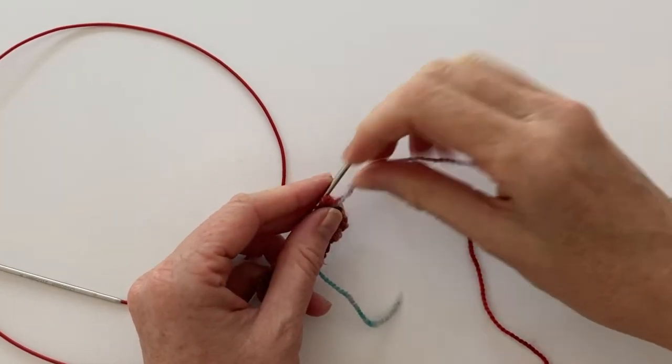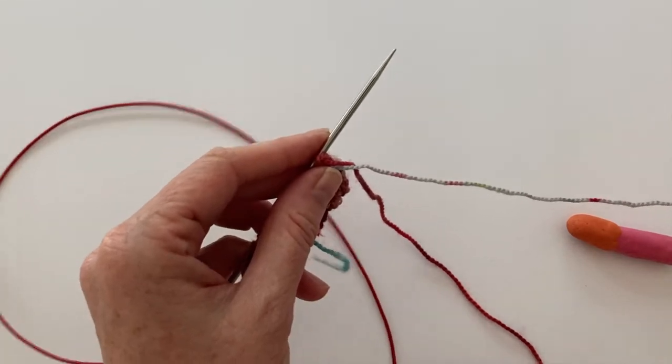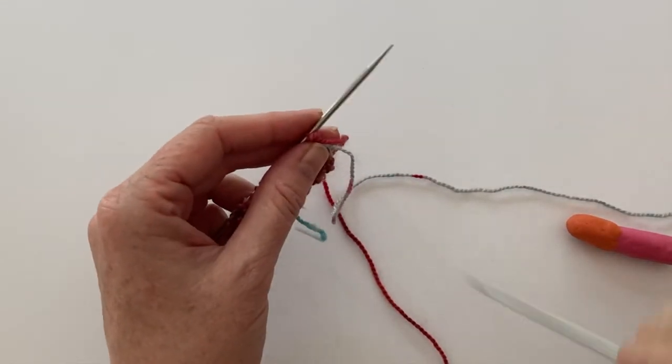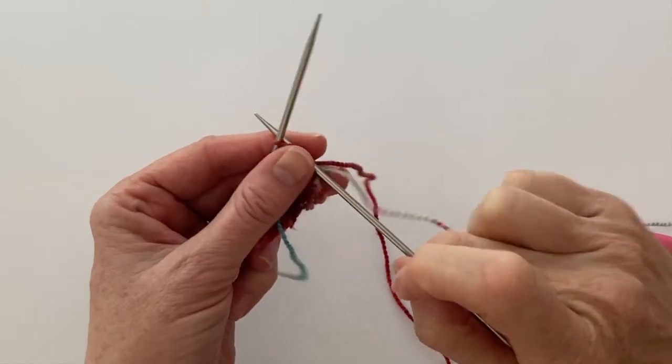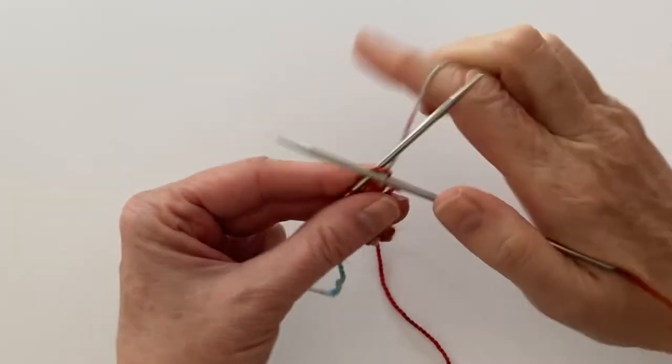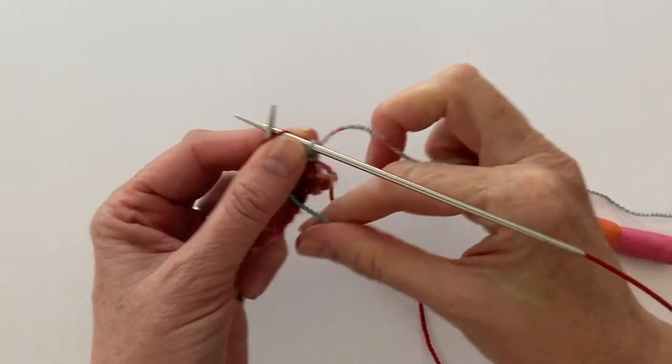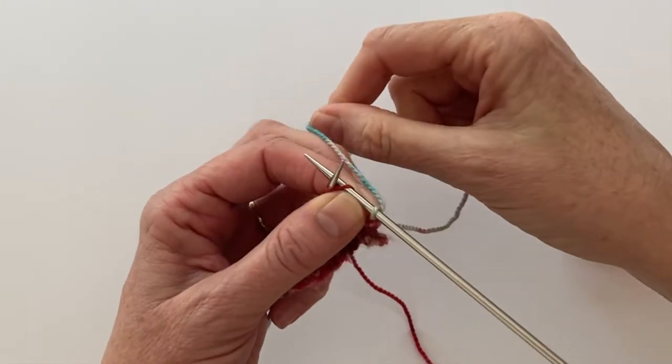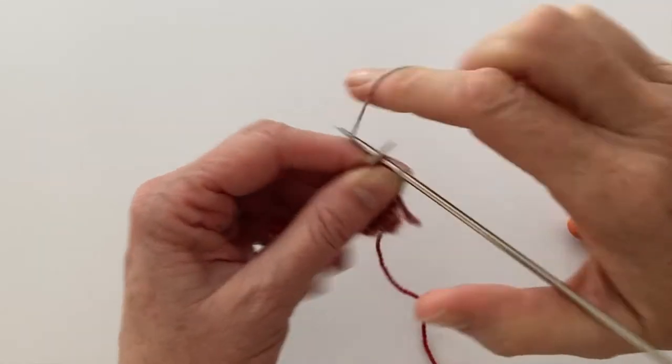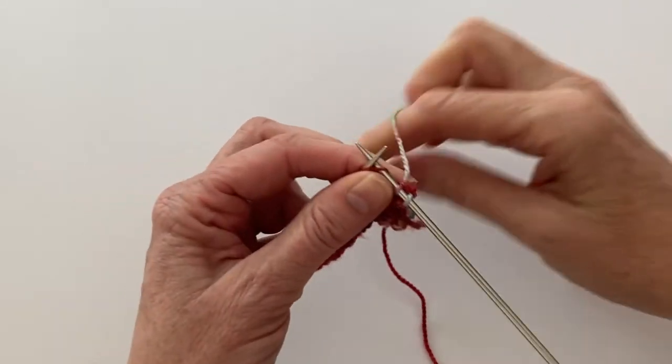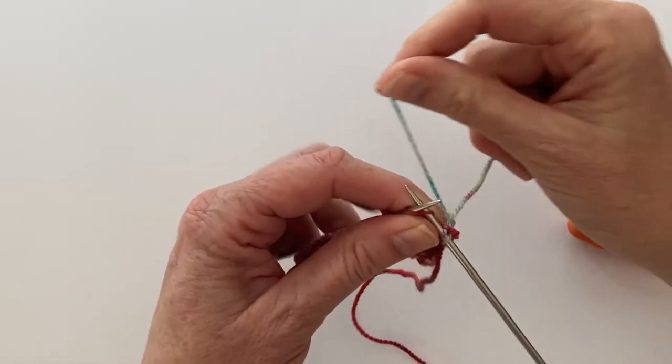I'm going to join my second color in and I'm going to weave the end in on this one as I go as well. I've knit my first stitch and then on the second stitch, I'm going to twist the tail over the working yarn.